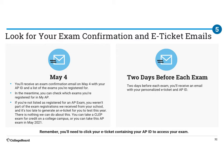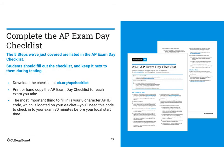On May 4th, you're going to receive a confirmation email and your AP ID, basically just confirming that you are taking a test. Two days before the exam, they'll send you the e-ticket. I'll have this posted for you.